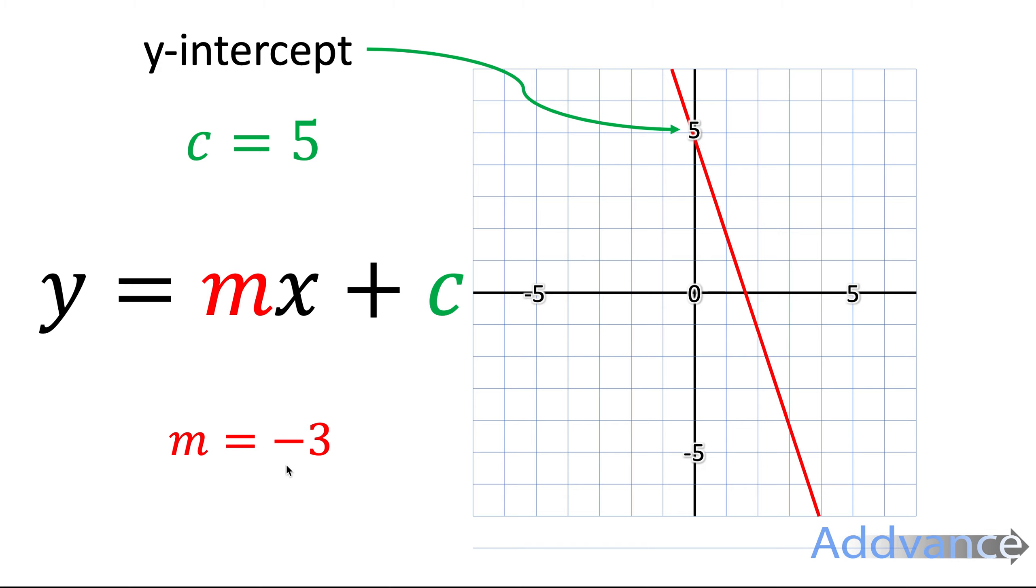So m is minus 3, and the plus c is 5. So we know the equation of the line is y equals minus 3x plus 5. Both m and c can both be positive or negative numbers. They can both be fractions, and they can both be decimals.